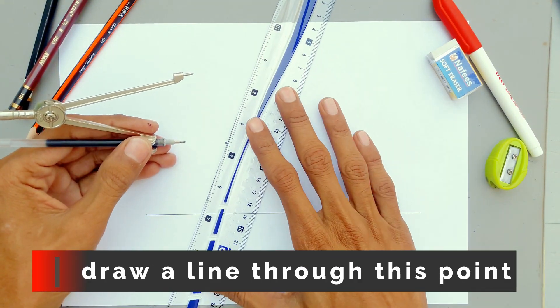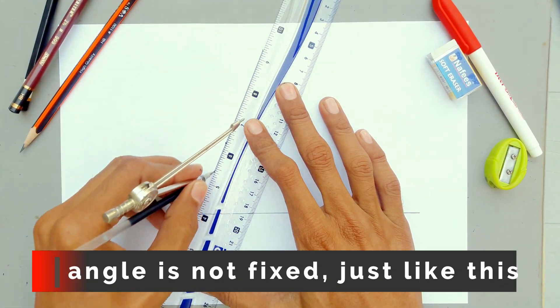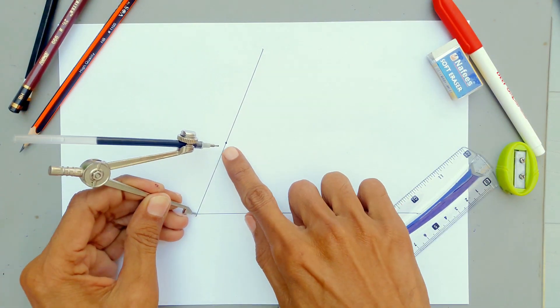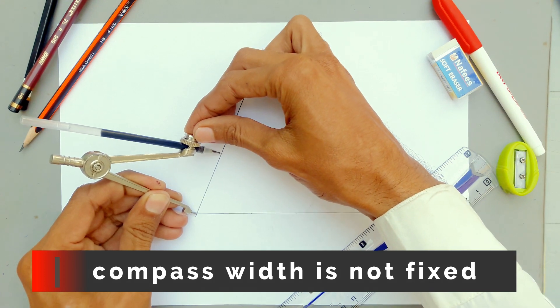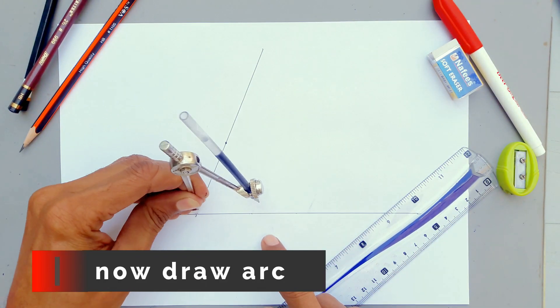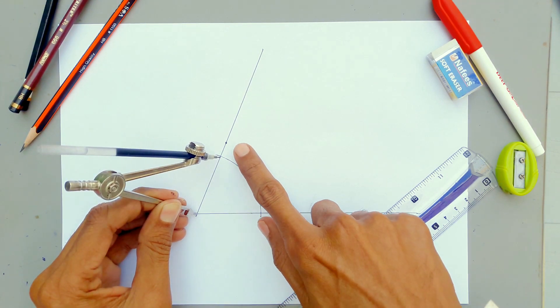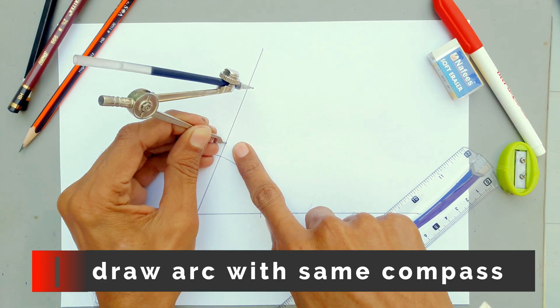Draw a line through this point. The angle is not fixed, just like this. Compass width is not fixed. Now draw an arc. Draw arc with same compass.